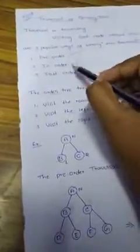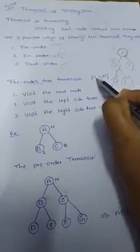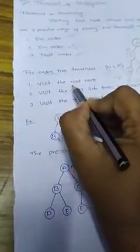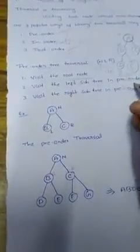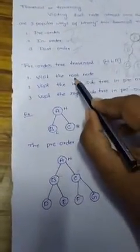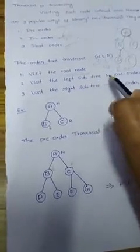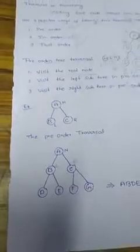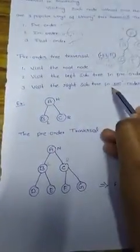First is pre-order tree traversal, denoted as N, L, R — where N represents the root node, L represents the left node, and R represents the right node. In pre-order traversal: first, we visit the root node; second, we visit the left sub-tree in pre-order manner; third, we visit the right sub-tree in pre-order manner.